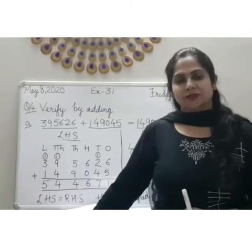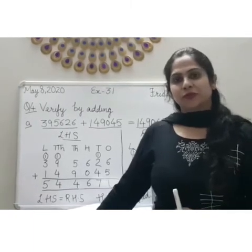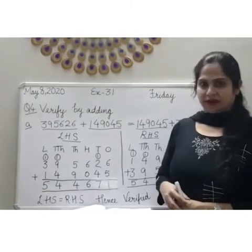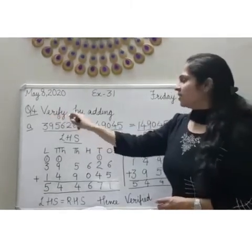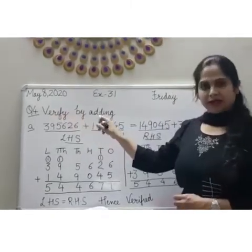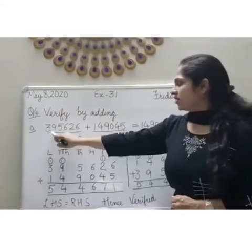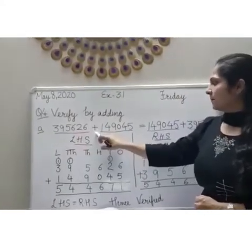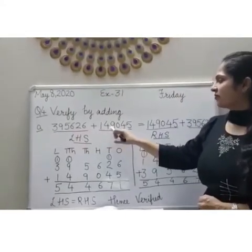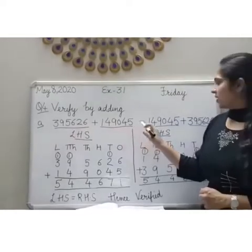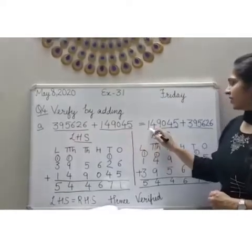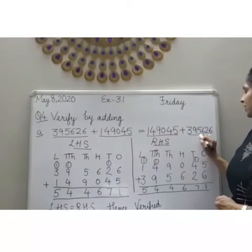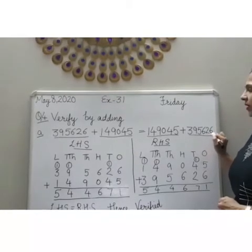Good morning students. Today we will do question number 4 of exercise 3.1. Question number 4 is verified by Aethe. Part A is: 395626 plus 149045 is equal to 149045 plus 395626.